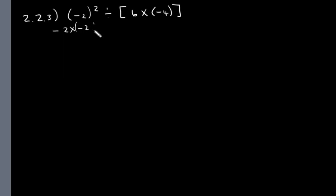What is negative 2 times negative 2? It is positive 4. And let's work this out. 6 times negative 4. Positive times a negative is a negative. And 6 times 4 is 24.